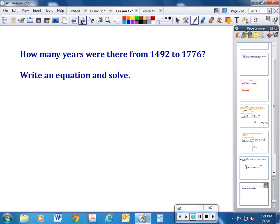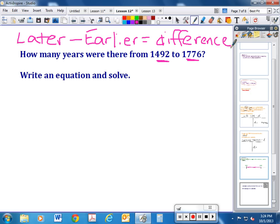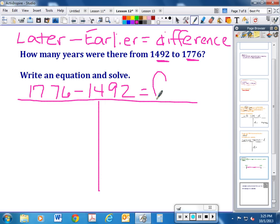How many years were there from 1492 to 1776? With elapsed time, you're always going to have the later date—so whatever the later time period is or the finishing time—minus the earlier equals the difference. Go ahead and put that in your notes: later minus earlier equals the difference. All right. Well here, between 1492 and 1776, the later date would be 1776 minus the earlier date, 1492, and we don't know what the difference is, so we put a letter there. Then you would solve it.